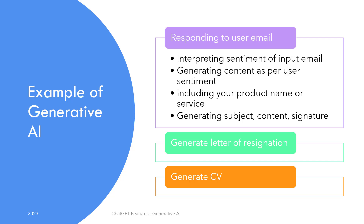You can instruct ChatGPT to empathize with the customer by adding the relevant part in the response — for example, "Thank you for appreciating our product," or "Sorry to hear about the issue you had with our product," with the product name to make it a more personalized response. You can also instruct it to include a certain signature in the email, like Customer AI Chatbot Assistant.